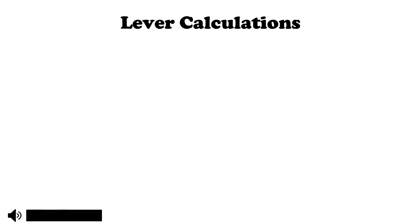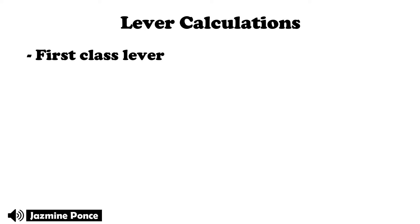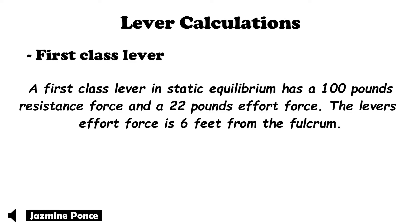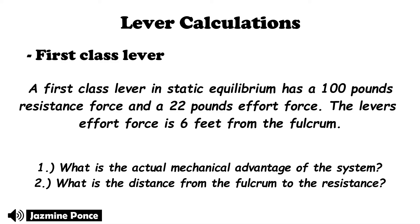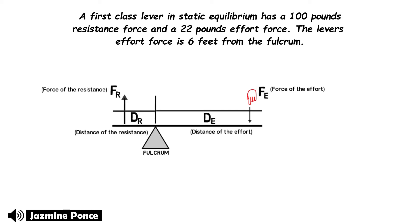Let's now have the lever calculations. For the first class lever, we have this example: a first class lever in static equilibrium has 100 pounds of resistance force and 22 pounds of effort force. The lever's effort force is 6 feet from the fulcrum. The first question is: what is the actual mechanical advantage of the system? We illustrate the lever with FR (force of resistance or load), FE (force of effort or input), DR (distance of resistance), and DE (distance of effort).